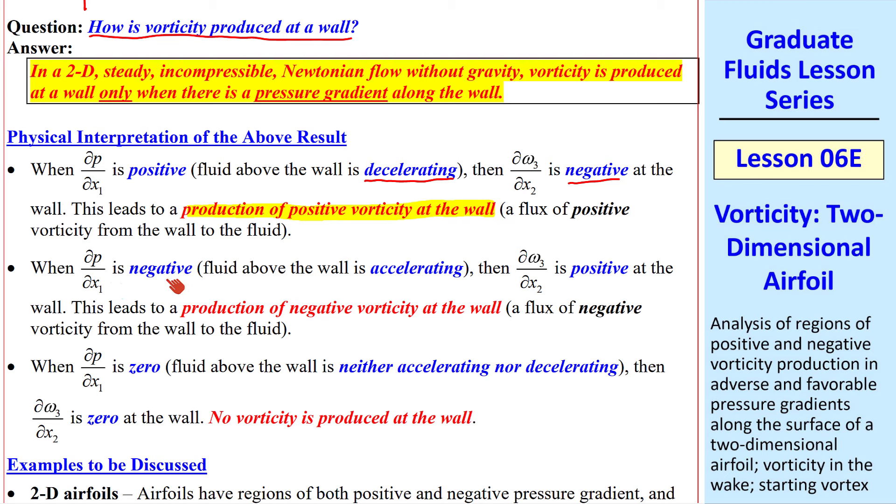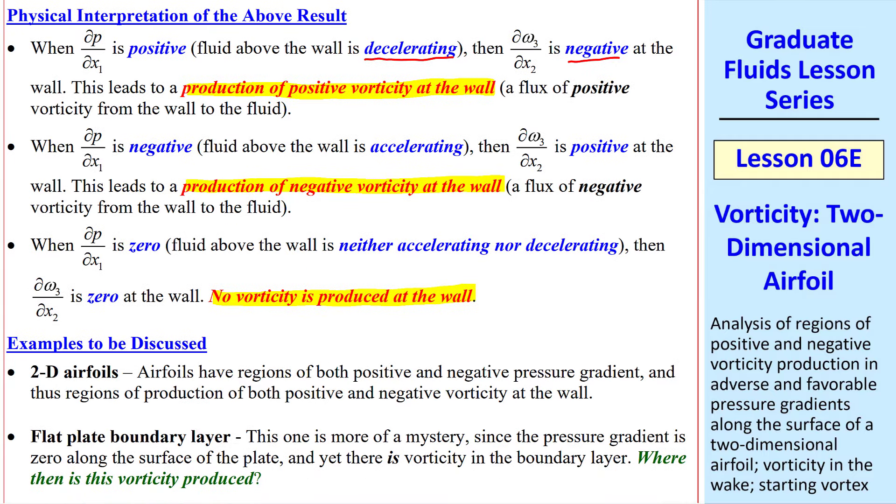In the opposite case, when ∂P/∂X1 is negative, the fluid is accelerating, the slope is positive, and we have a production of negative vorticity at the wall. When there's no slope, the flow is neither accelerating nor decelerating. There's no slope of vorticity when there's no pressure gradient, and thus no vorticity is produced at the wall.